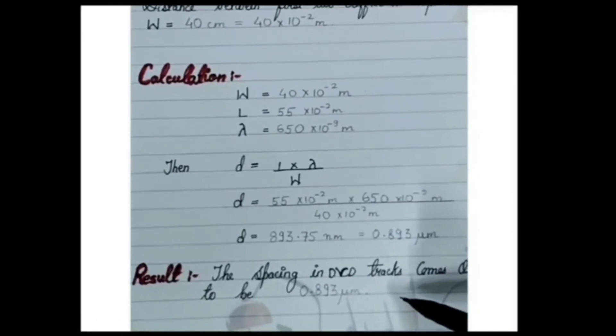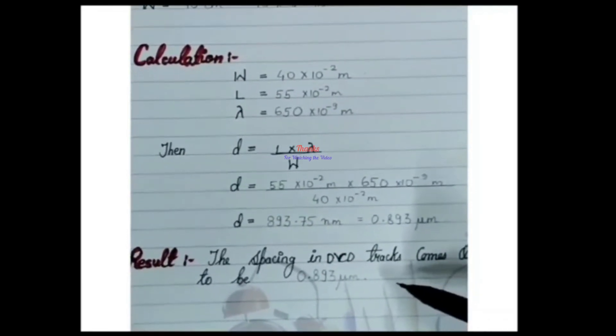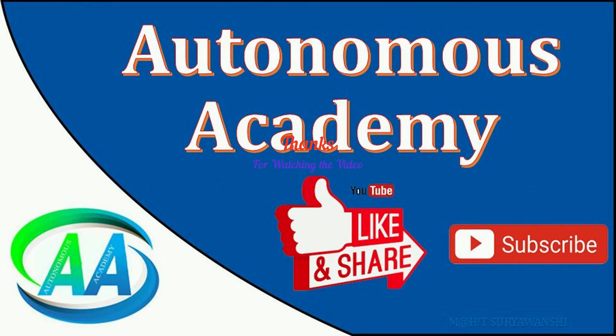Hence the result: the spacing in DVD tracks comes out to be 0.893 micrometers. Thanks for watching the video.